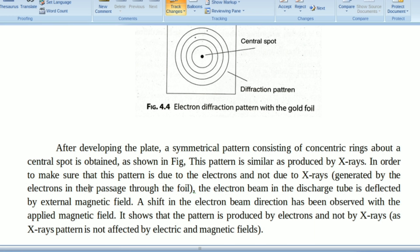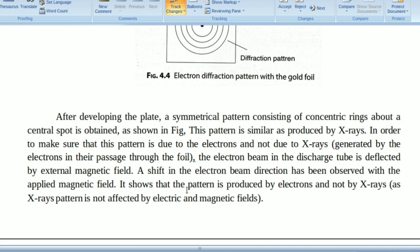The electron beam in the discharge tube is deflected by an external magnetic field. A shift in electron beam direction has been observed with the applied magnetic field. It shows the pattern is produced by electrons and not by X-rays, as X-ray patterns are not affected by electric and magnetic fields.